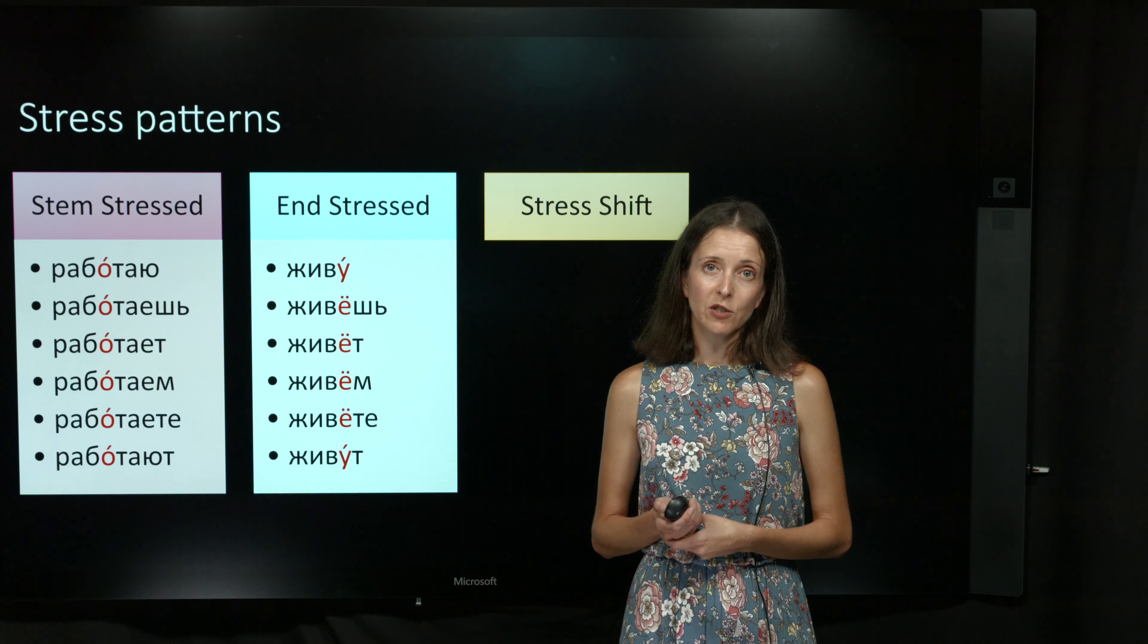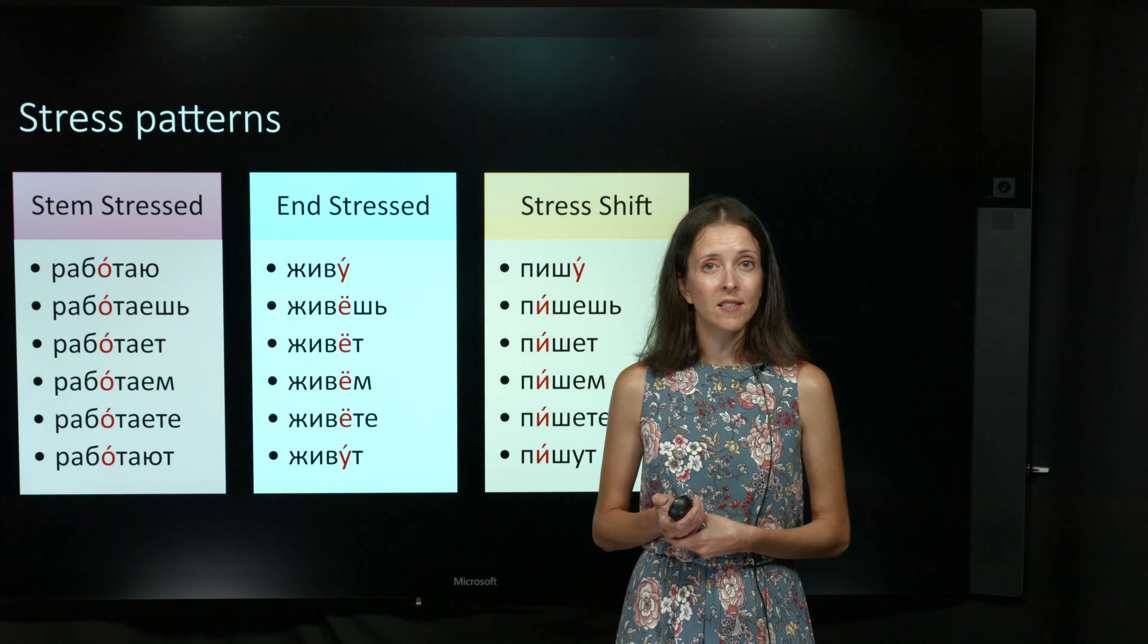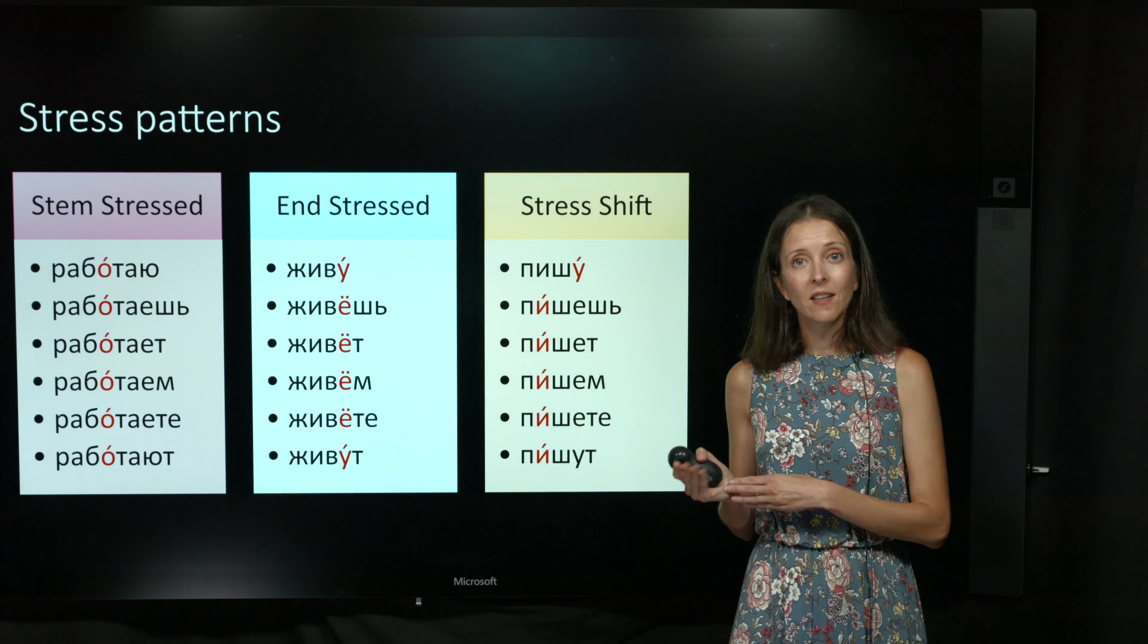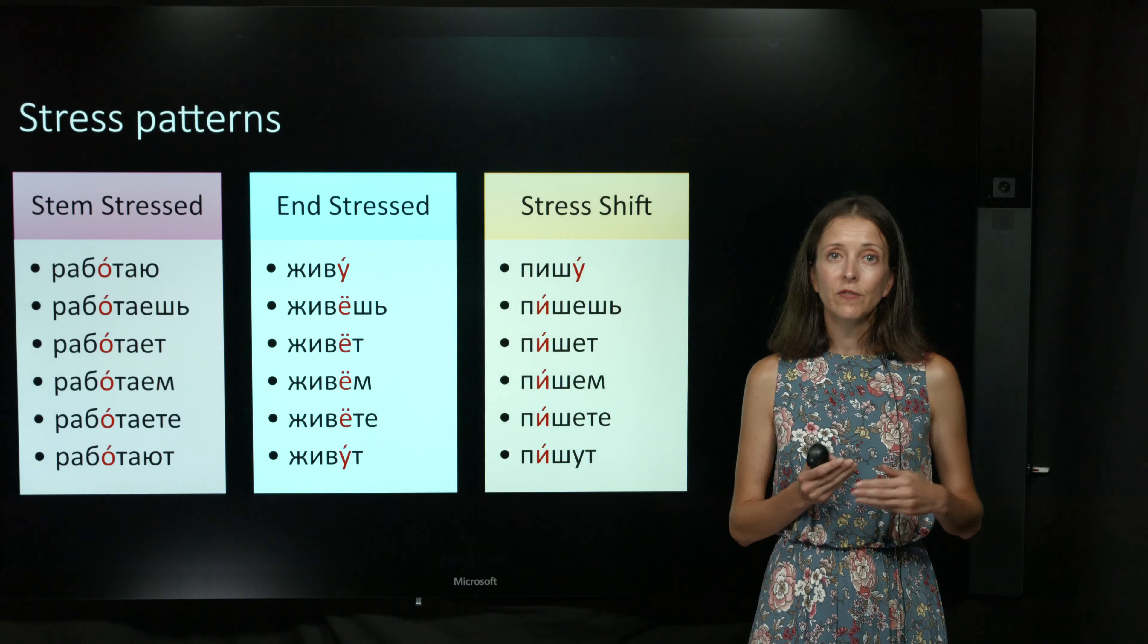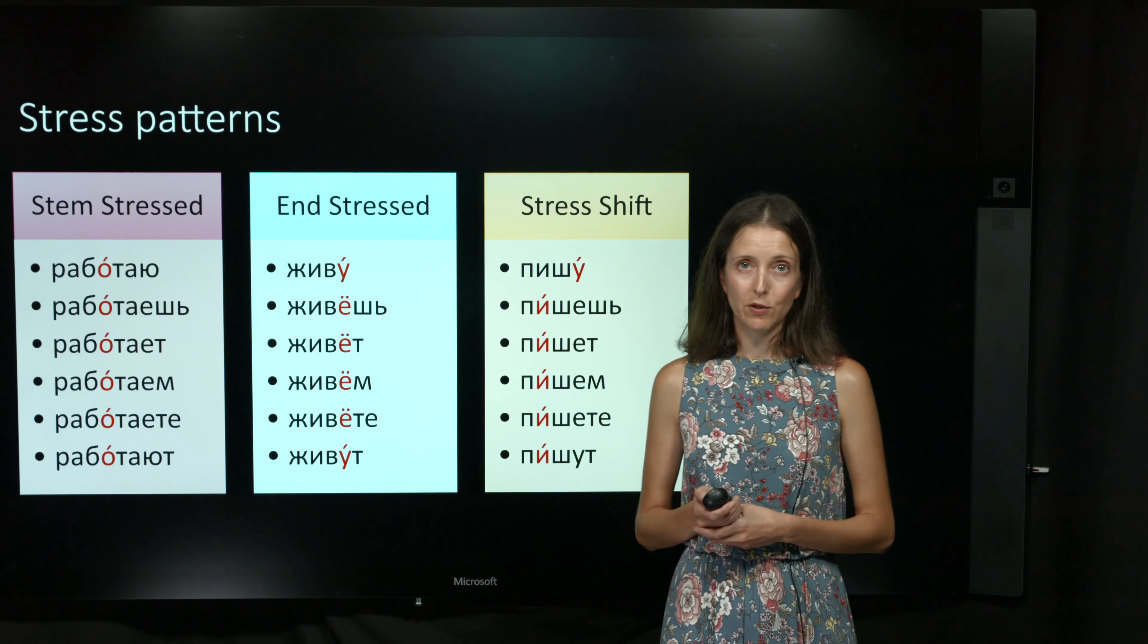Or they can have a shifting stress, like the verb писать, where the stress will be on the ending in the Я form, and then it will shift to the stem in the rest of the forms.